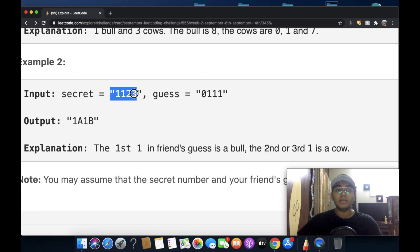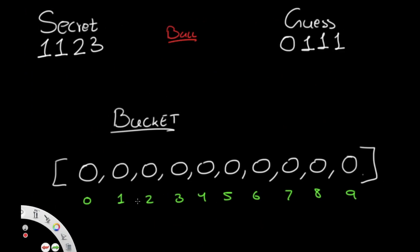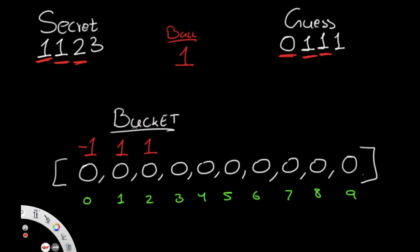Let's verify with a second example: secret 1123, guess 0111. Going through: secret 1 / guess 0 → index 1 +1, index 0 -1. Secret 1 / guess 1 → same position and digit, so bulls becomes 1. Secret 2 / guess 1 → index 2 +1 (becomes 1), index 1 -1 (becomes 0). Secret 3 / guess 1 → index 3 +1, index 1 -1 (becomes -1).